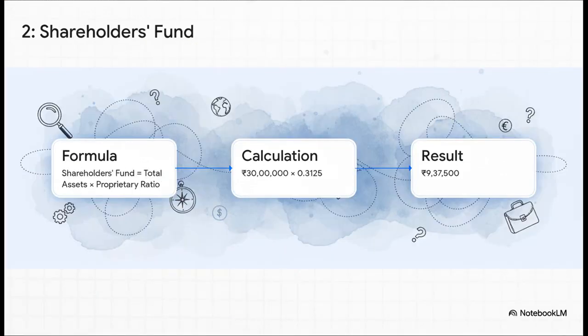We immediately use the total assets figure we just found. The proprietary ratio is given as 0.3125, which basically tells us how much of the company is funded by its owners. So, 30 lakhs multiplied by 0.3125 gives us the shareholders fund, 9,37,500 rupees. We're already building the capital structure.